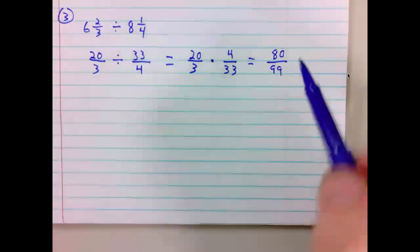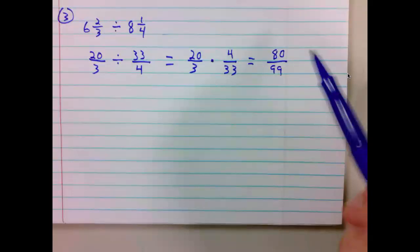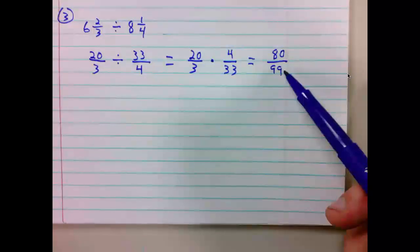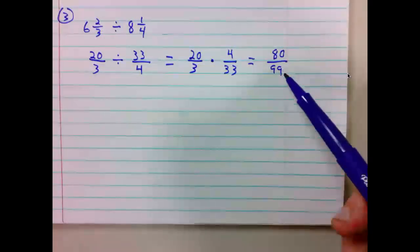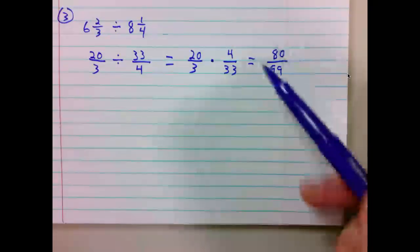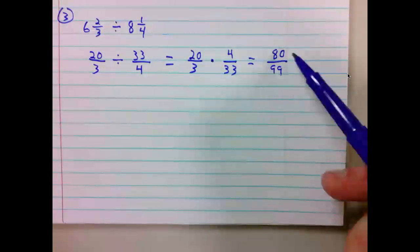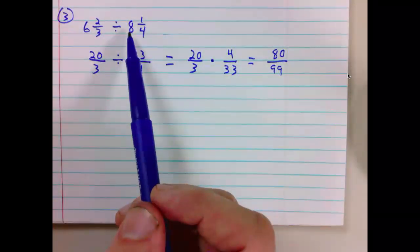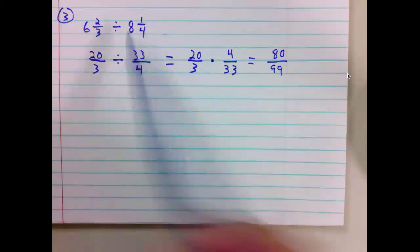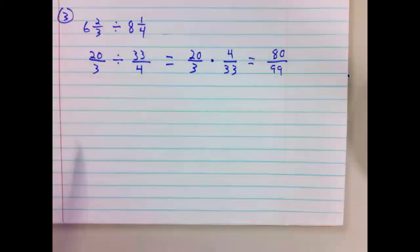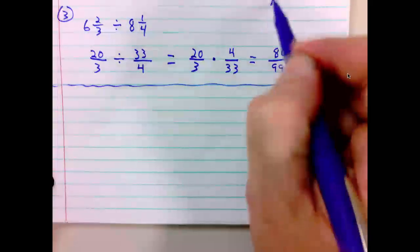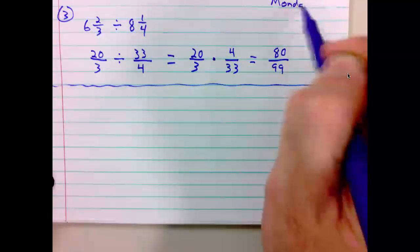Lastly, we should consider any reducing. There are no common factors between 80 and 99. 80 over 99 is close to 1. Since the numerator is smaller than the denominator, it's less than 1, but 80 is close to 99. This quotient is close to 1. Going back to our initial problem, we had 6 divided by 8. 6 divided by 8 is 3 fourths, which is also close to 1. So we can see that 80 over 99 is a reasonable result. And that is all that we have for Monday. You should now be able to work problems 1 and 4.